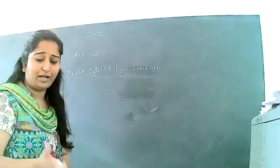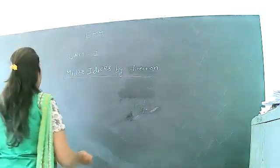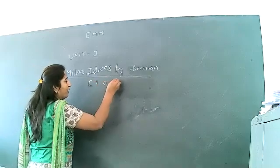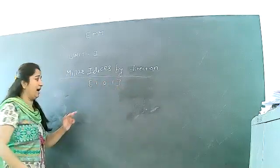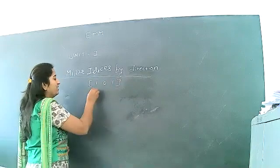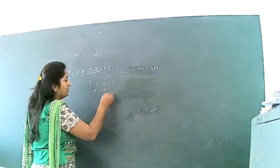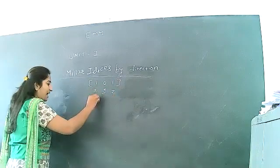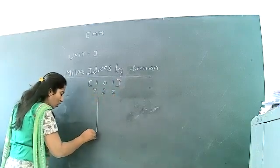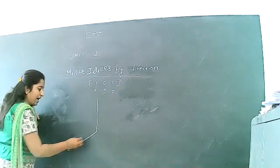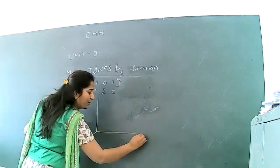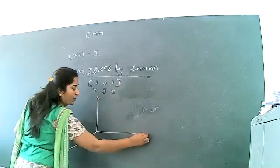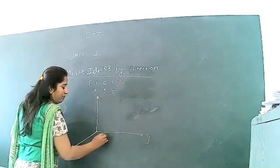For direction, we will see one problem: represent [1, 0, 1]. It is clear that x coordinate is 1, y is 0, and z is 1. So directly we will draw three axes which are mutually perpendicular to each other — x, y, and z.